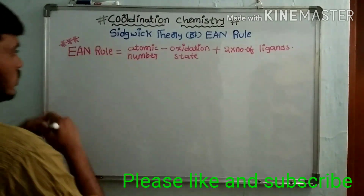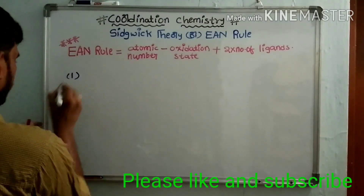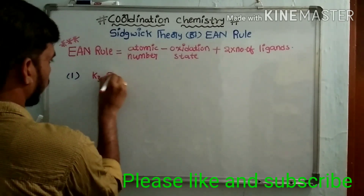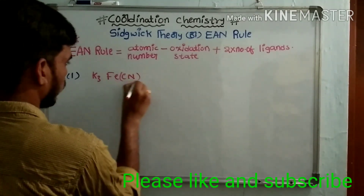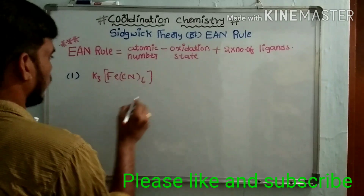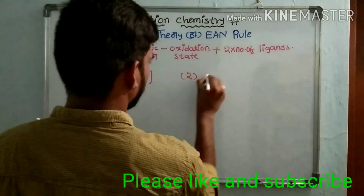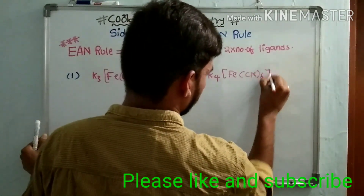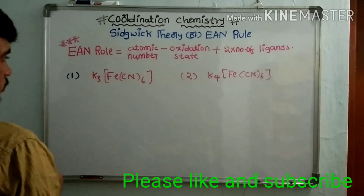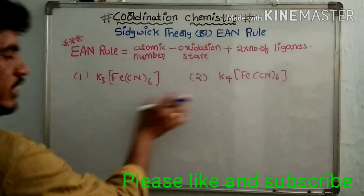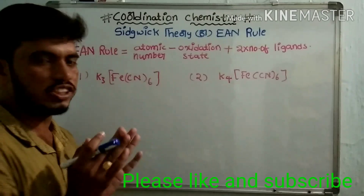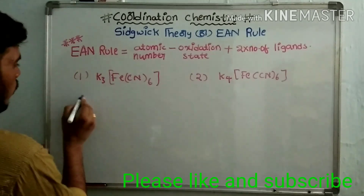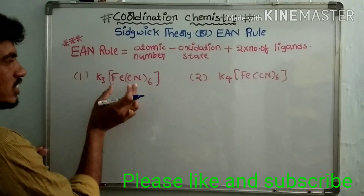Now let's look at some examples. The first example is K₃[Fe(CN)₆] and the second one is K₄[Fe(CN)₆]. These are two metal complexes. We need to determine which one is the more stable metal complex by finding the EAN values of each.